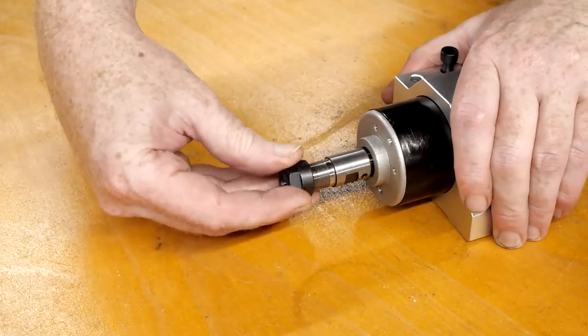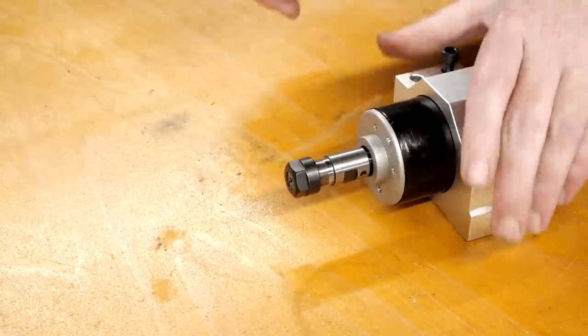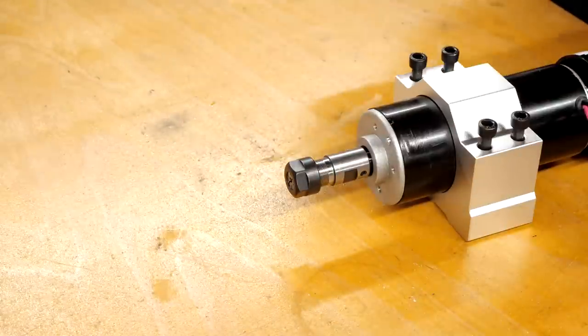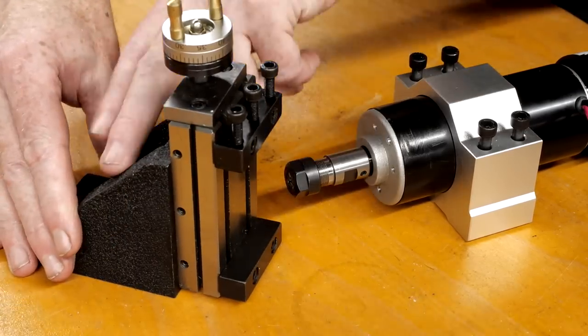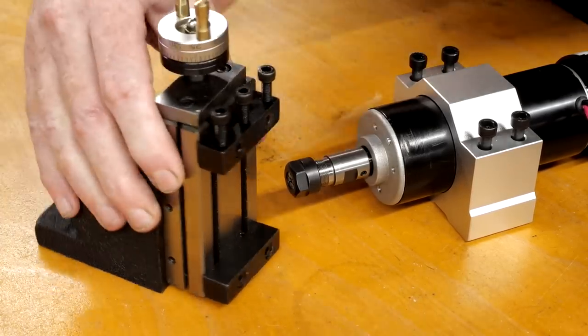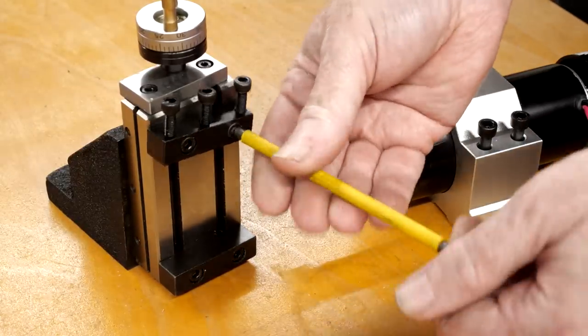My plan is to mount this spindle on the lathe carriage, and to do this I'm planning to use a vertical slide. This is the one I've bought for this purpose. The T-slot clamps aren't useful for this use case, so let's remove them.